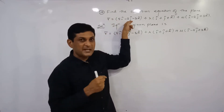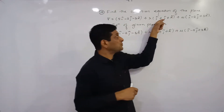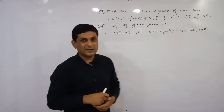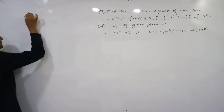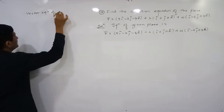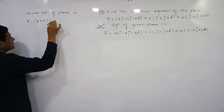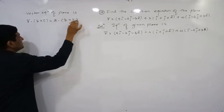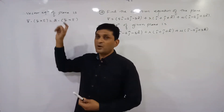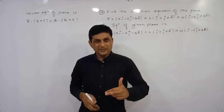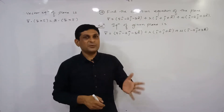In this equation, ā is the position vector of one point on the plane, and b̄ and c̄ are two vectors parallel to the plane. If we have these three vectors, the vector equation of the plane can be found using the formula: r̄ · (b̄ × c̄) = ā · (b̄ × c̄). From the given equation we extract the values of ā, b̄, and c̄, apply this formula to get the vector equation, and then convert it to the Cartesian equation in one or two steps.